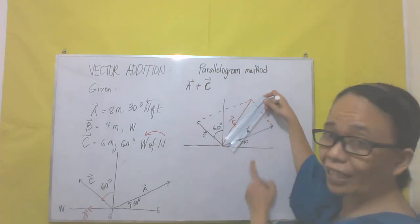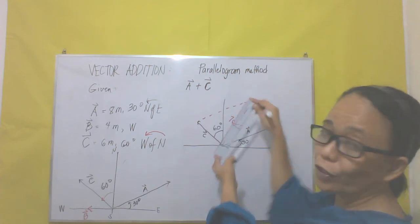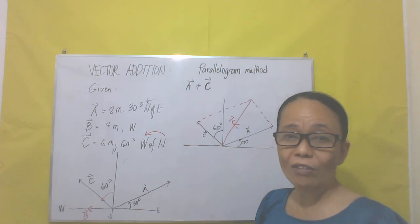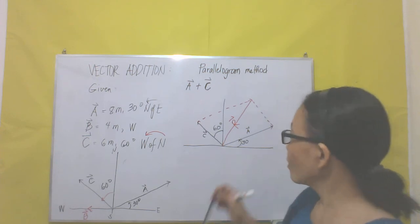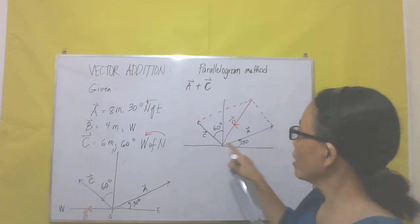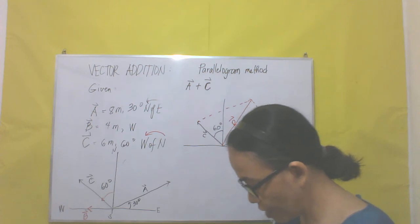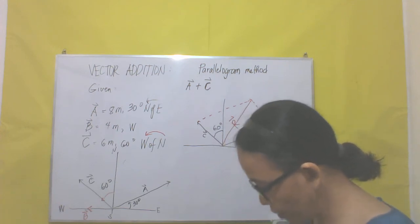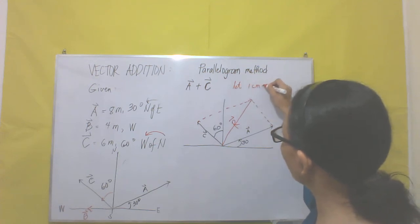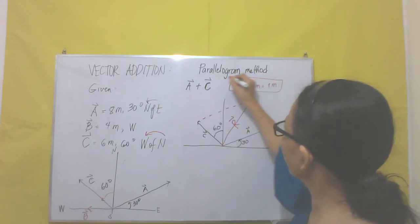Now you are going to measure the length of the resultant using your ruler to get the magnitude. The assumption is: let 1 cm be equal to 1 meter. So if vector A is 8 meters, you use 8 cm, and vector C is 6 meters, so you use 6 cm. Same assumption: 1 cm equals 1 meter.